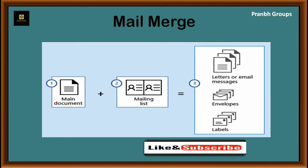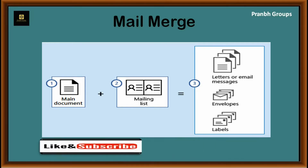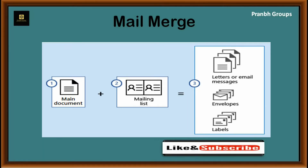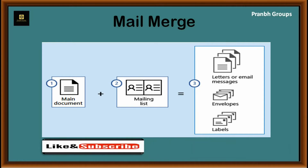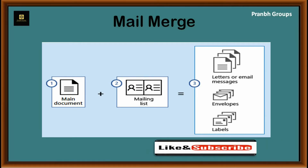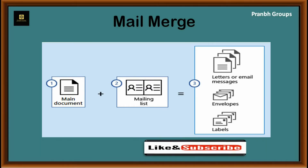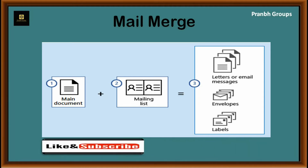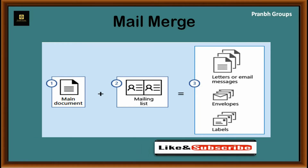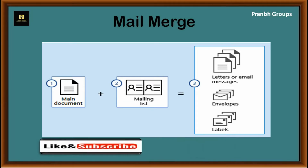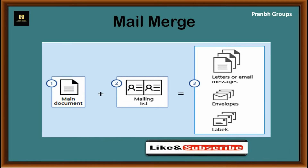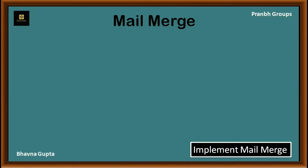Obviously, the matter of the letter will be the same but the addresses will be different for different parents. One way is to create a letter, copy the address from the address list, change the address for each set of parents, and print the letter. This procedure of copying and changing is repeated as many times as the number of parents. This way, creating multiple documents becomes very time-consuming and tedious — not possible if there are hundreds or thousands of addresses. The word processor has a special feature of mail merge to accomplish this task in one step.